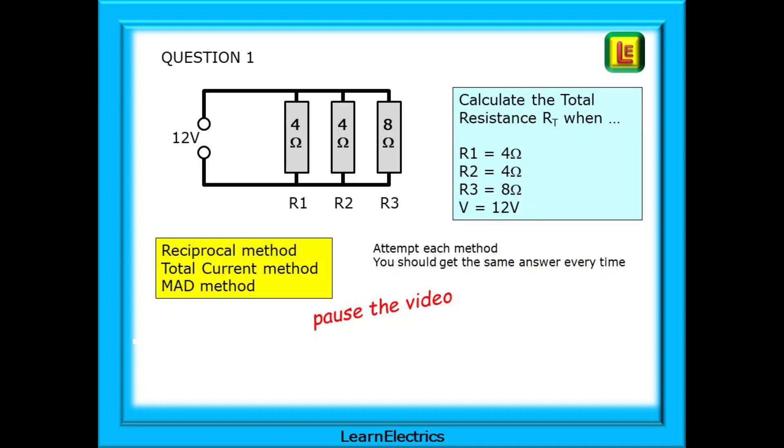Here is question one. Pause the video, draw the circuit, add the values, and attempt all three types of calculation before looking at the answers on the next slide. Attempt each type of calculation. The reciprocal method, the total current method, and the MAD method. If you've calculated correctly, all three answers will be the same. Pause the video now.